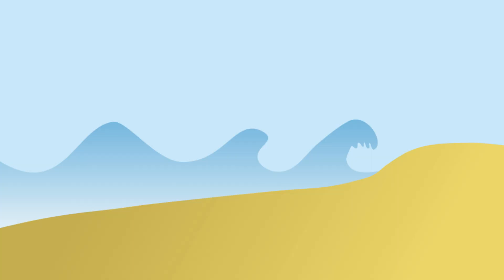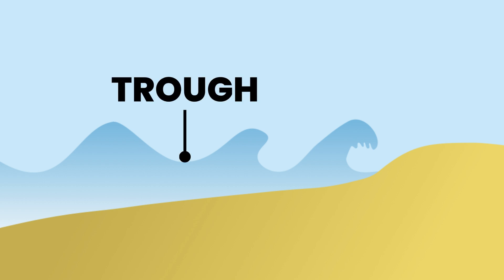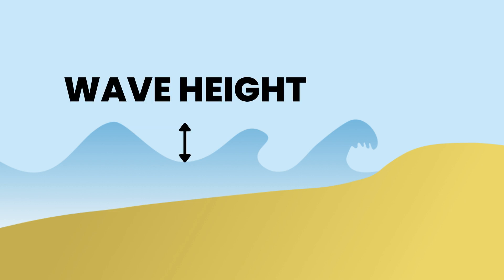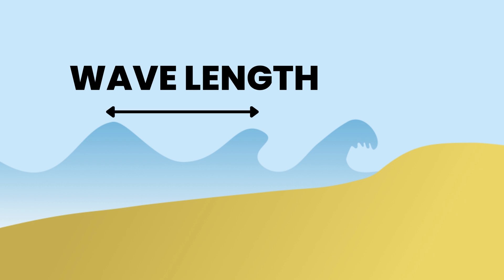Waves have a range of characteristics you need to be aware of. The highest part of a wave is called its crest. The lowest part is called its trough. The distance between the crest and trough is the wave height. The distance between two crests is the wavelength.